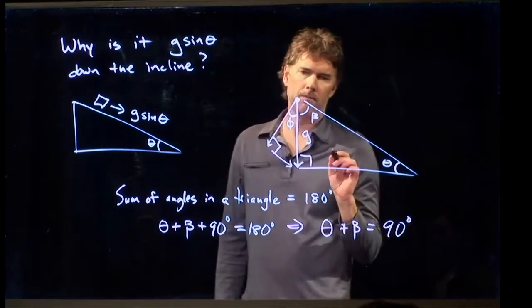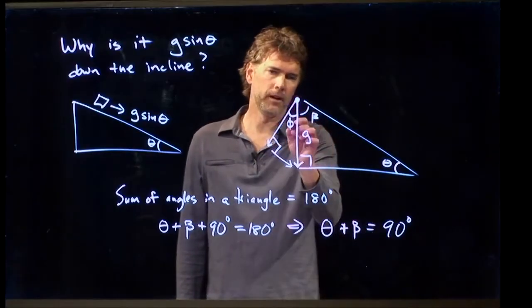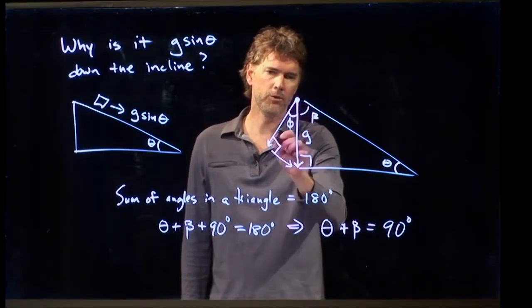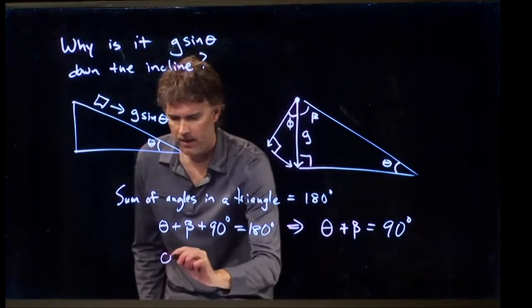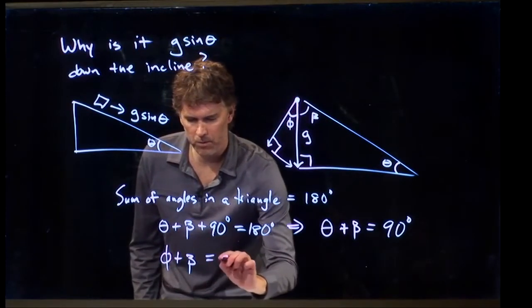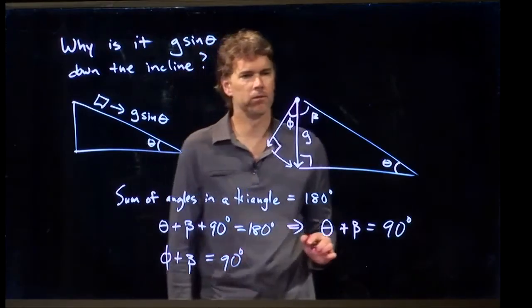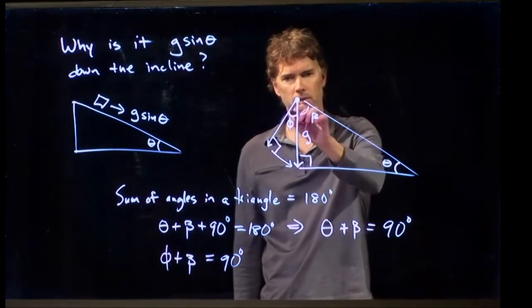Alright, that's good. But now let's look at these two angles right here. The way we drew our vectors, beta plus phi is also equal to 90 degrees. Right? That is a right angle there.